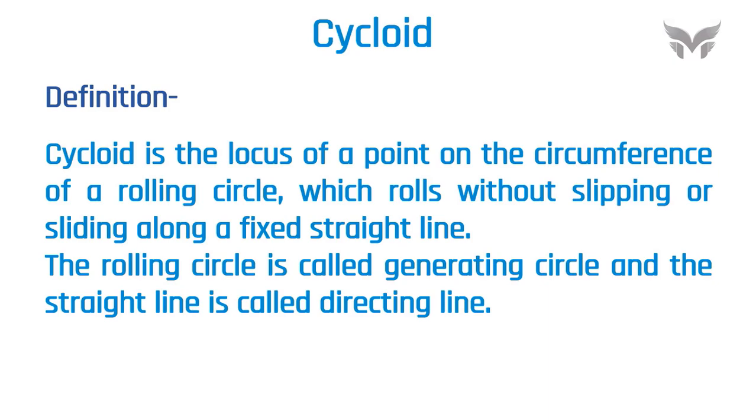Cycloid is the locus of a point on the circumference of a rolling circle which rolls without slipping or sliding along a fixed right line. The rolling circle here is called generating circle and the straight line is called directing line.